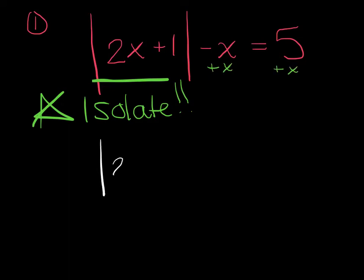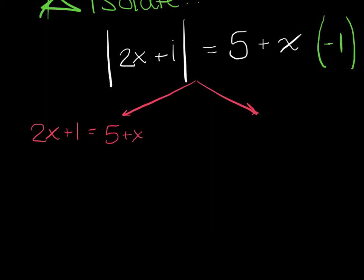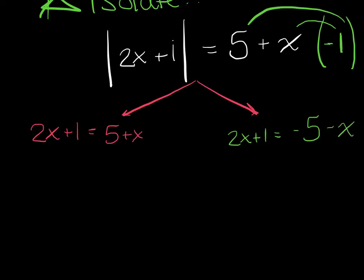So I should be getting the absolute value of 2x plus 1 equals 5 plus x — these are not like terms, I can't combine them. Now that it's isolated, we can split into our two equations. Remember, absolute value gets two equations. The first one you leave alone. The second one says you negate one whole side — you're multiplying one whole side by negative 1. So I'm leaving my 2x plus 1 and negating this side: minus 5 minus x. Now we simply solve each equation.